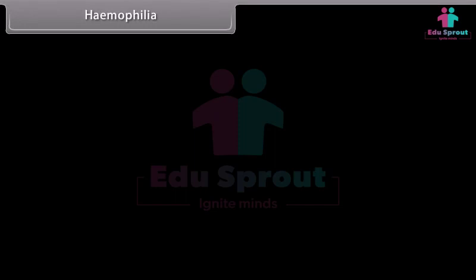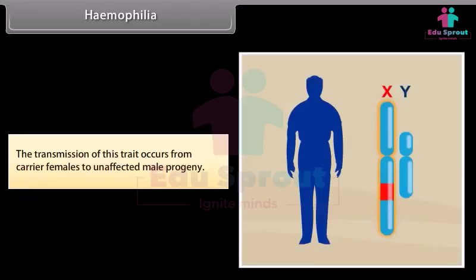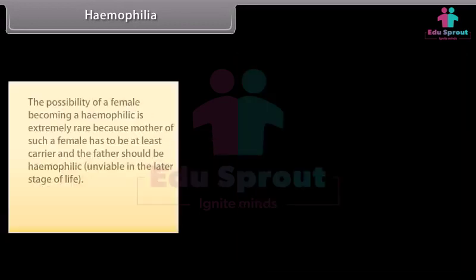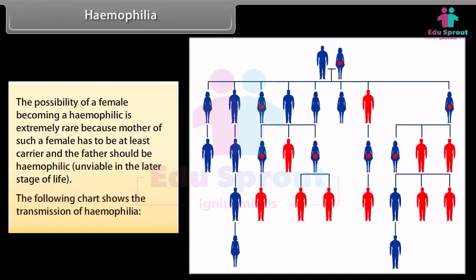Haemophilia is a sex-linked recessive disorder that impairs the body's ability to control blood coagulation, caused by deficiency of certain clotting factors. The transmission occurs from carrier females to unaffected male progeny. The possibility of a female becoming haemophilic is extremely rare because the mother has to be at least a carrier and the father should be haemophilic. The following chart shows the transmission of haemophilia.